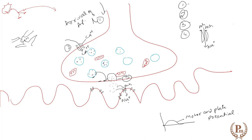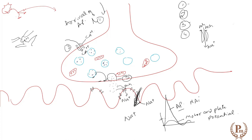Once there is this small depolarization at the motor end plate, it opens up the larger voltage-gated sodium ion channels. Once they open up, there is mass influx of sodium ions. This mass influx of sodium causes a larger depolarizing current, which may reach the threshold level. Once the threshold is reached, an action potential is generated — called the muscle action potential.